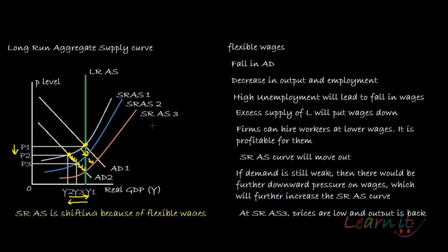The aggregate supply curve shifts all the way out to SRAS3. At the intersection of SRAS3 and AD2, prices are low and output is back at its initial full employment level. Note that Y1 is the full employment level of output — that is the level of output produced when all resources are fully employed, representing the maximum amount of output the economy could produce. Initially the economy was at Y1, the full employment level of output.